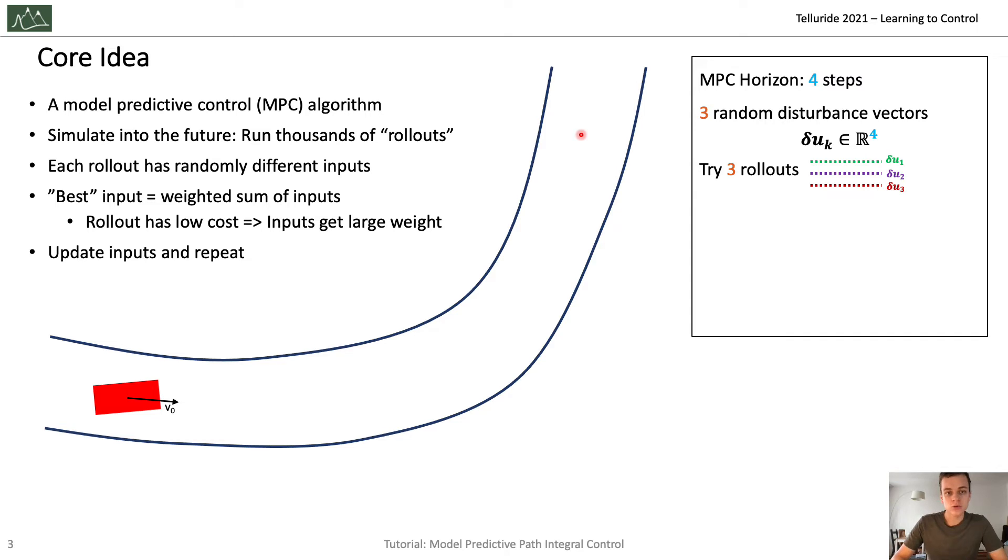We are going to have three colors for those three rollouts, Delta U_1, 2, and 3. In the kth rollout, we apply the disturbed input vector U plus Delta U_k, where Delta U_k is the random component and U is the so-called vector of nominal inputs.